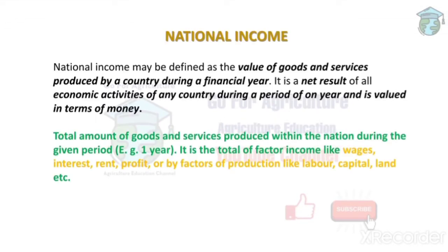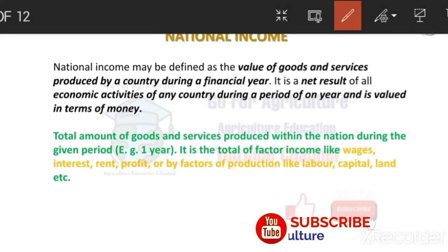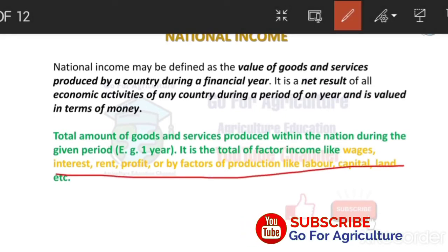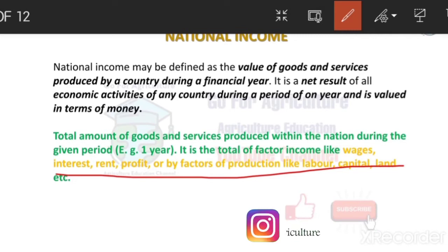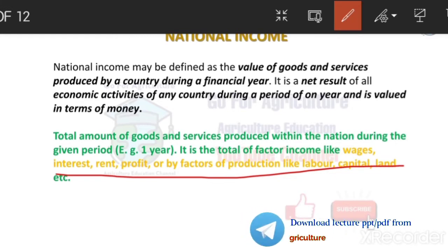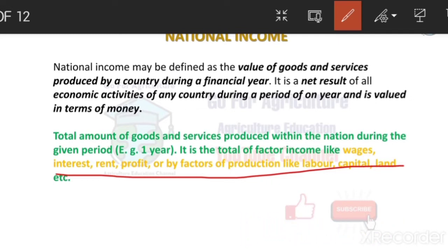What does National Income mean? It is the value of goods and services produced by a country during a financial year. The sources include goods and services, wages, interest, rent, profit, and factors of production. These all are sources of income — the country will get money by using all these sources.